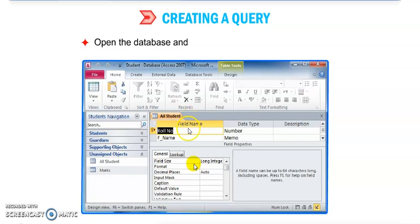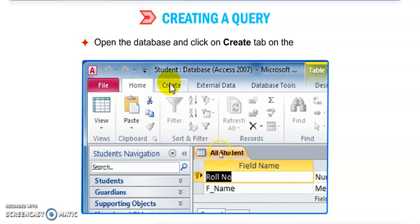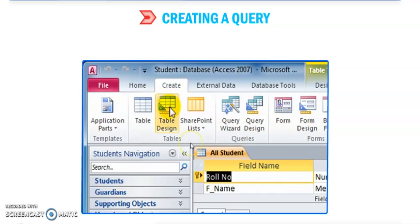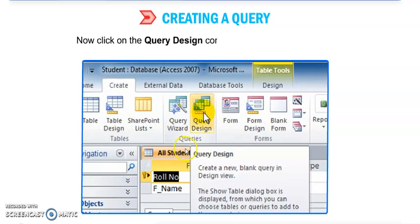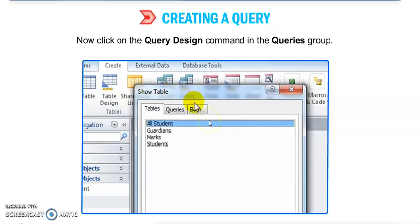Steps to create a view: Open the database and click on Create tab on the ribbon. Now click on Query Design. You can see this is the option.